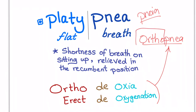Ortho means erect, and PNEA means breathe. With orthopnea, the patient breathes when erect. With orthodeoxia and platypnea, the patient is relieved when lying down, but when erect there is deoxygenation. Platypnea is shortness of breath on sitting up, relieved in the recumbent position. Orthodeoxia is the same as platypnea; orthopnea is the exact opposite.